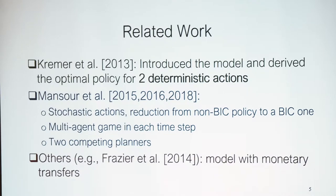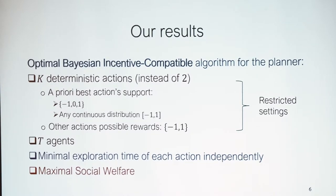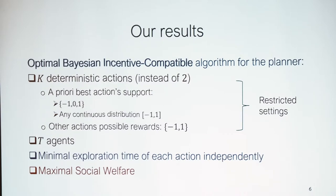There is another line of work handling a model with monetary transfers. Our result is an optimal Bayesian incentive compatible algorithm for the planner that handles any number of deterministic actions. The a priori best action has support of either minus one, zero, or one — the discrete version. We also show in the paper how to handle any continuous distribution with support between minus one and one for the a priori best action. All other actions can have rewards of either minus one or one. Our algorithm handles any number of agents, minimizes the exploration time of each action independently, and achieves maximum social welfare.